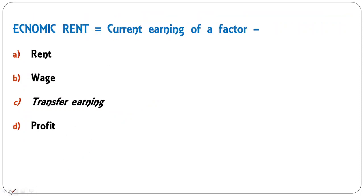How do you calculate economic rent? Economic rent equals current earning of a factor minus transfer earning. C is the correct answer. This formula applies to any factor — labor, capital, etc. Economic rent = current earning of a factor minus transfer earning.